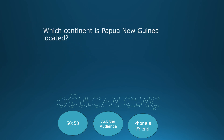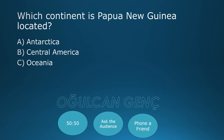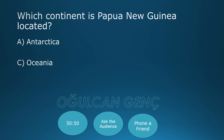Which continent is Papua New Guinea located? Antarctica, Central America, Oceania, Scandinavia. Using 50/50 lifeline — computer removes two wrong answers, leaving Antarctica and Oceania. Final answer: Oceania, C. Correct answer.